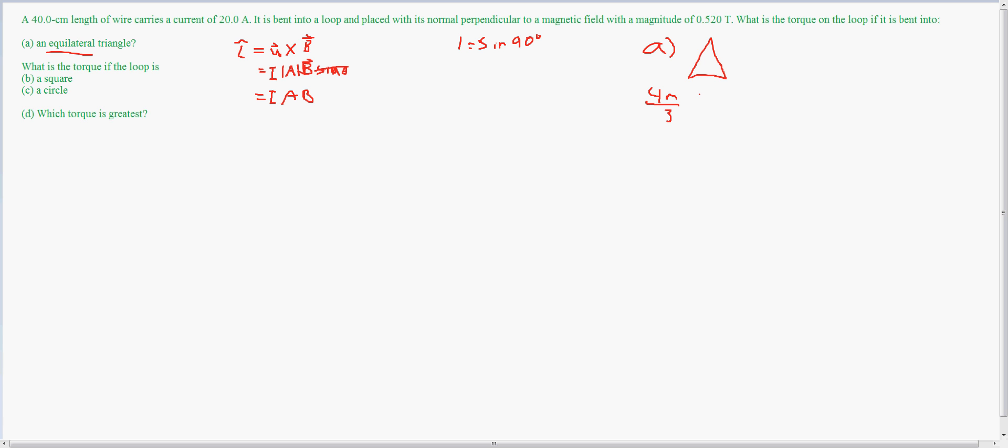And then I have that times one-half because the area of the triangle is one-half base. So this is base right here. And then height. Now the height is sine 60 times the length of the side. So what I'll do is sine 60 times 0.4 meters divided by 3. And this is the area.